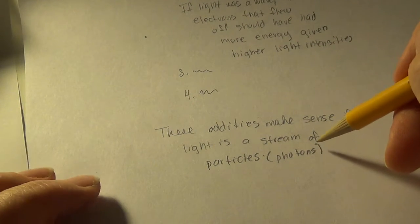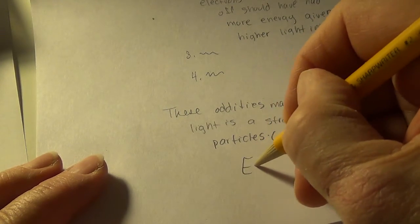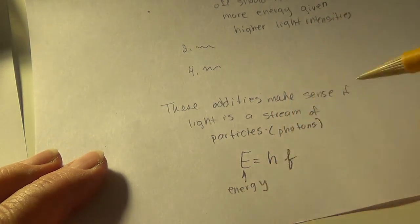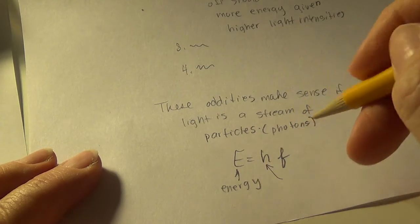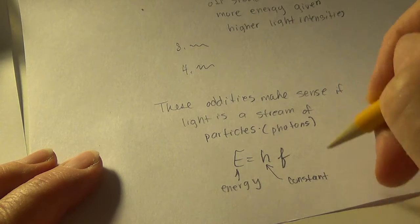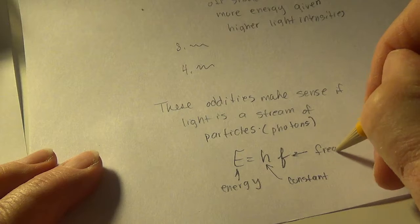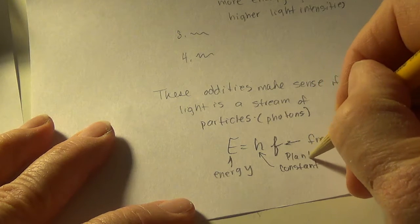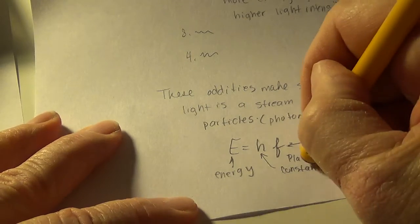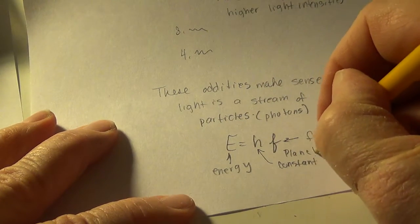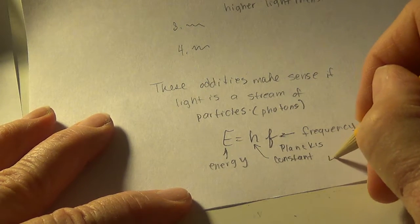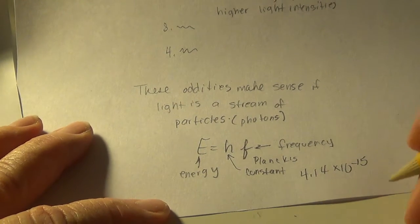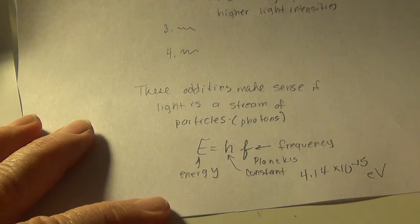Little, tiny particles of energy are what makes up light and they are called photons. And, their energy and these photons are related to frequency in this way. Energy equals H times F where E stands for energy and H stands for a constant which I'll give you in a minute and F is our friend frequency. So, the constant is called Planck's constant. I think it's P-L-A-N-C-K, Planck's constant. And, that number is 4.14 times 10 to the minus 15 and it's in a unit called E-Volts.